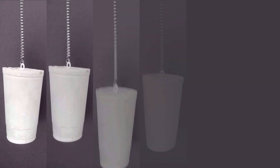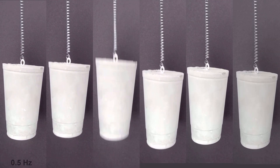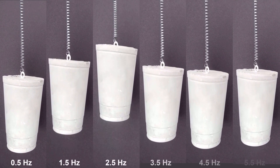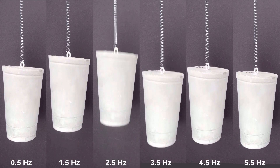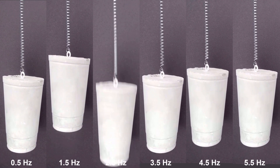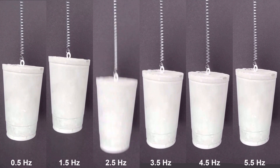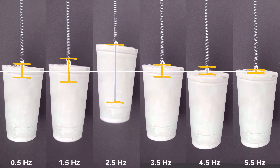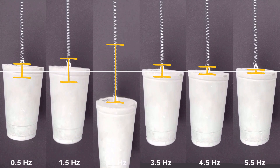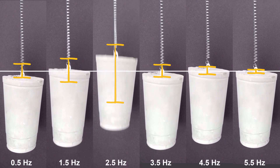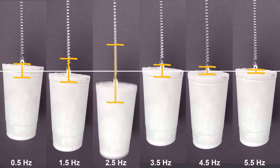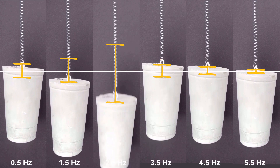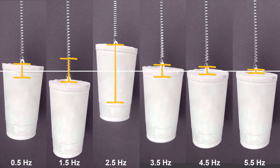I did six different experiments, each being excited by six different frequencies, and I noticed this crazy behavior. They all seem to oscillate with different amplitudes. Somehow, the stepper motor causes large vibration near 2.5 hertz, but relatively small vibration elsewhere.